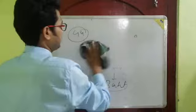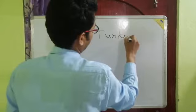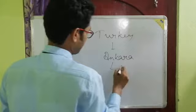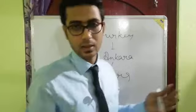The next country is Turkey. The capital of Turkey is Ankara and the currency is Lira. So Turkey is another very important country — Ankara is the capital and Lira is the currency.